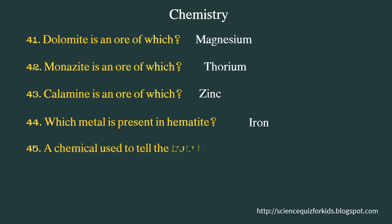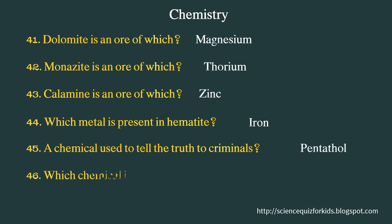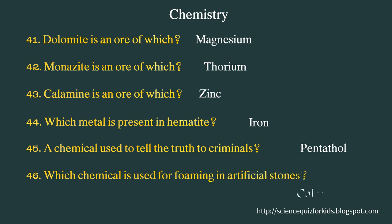A chemical used to tell the truth to criminals: Pentothal sodium. Which chemical is used for forming artificial stones? Chlorohydrate.